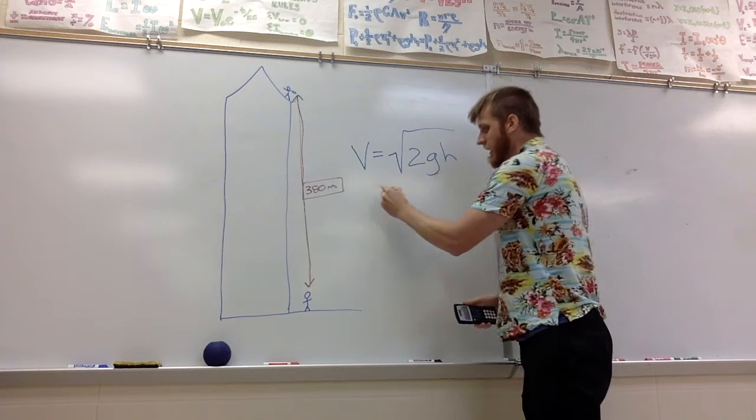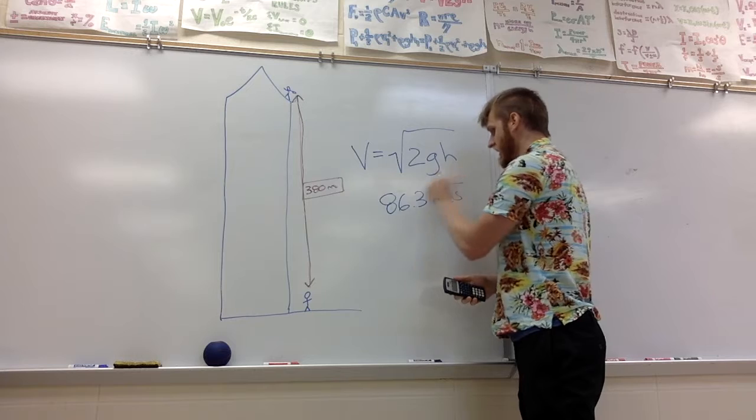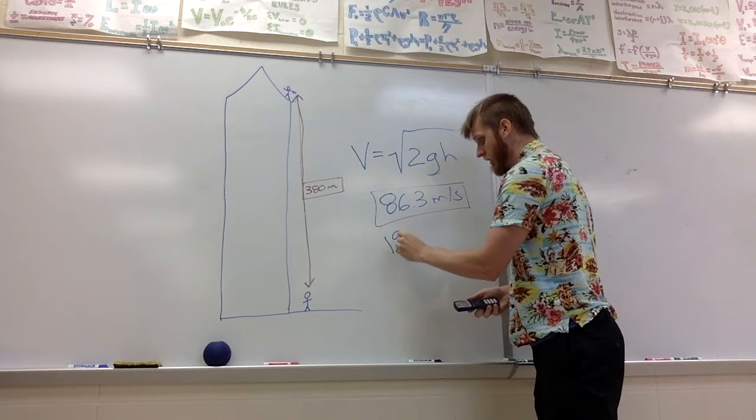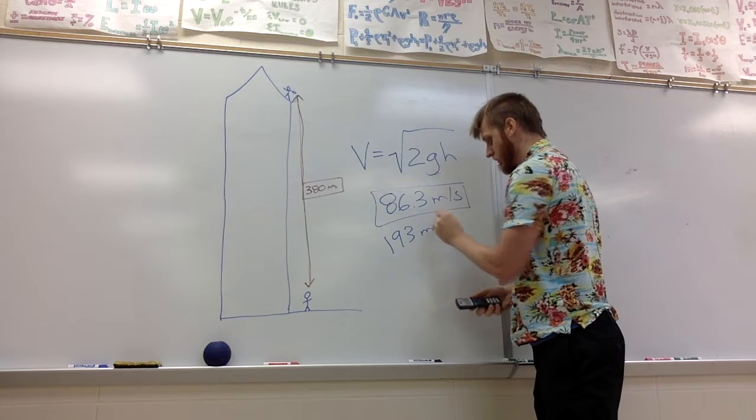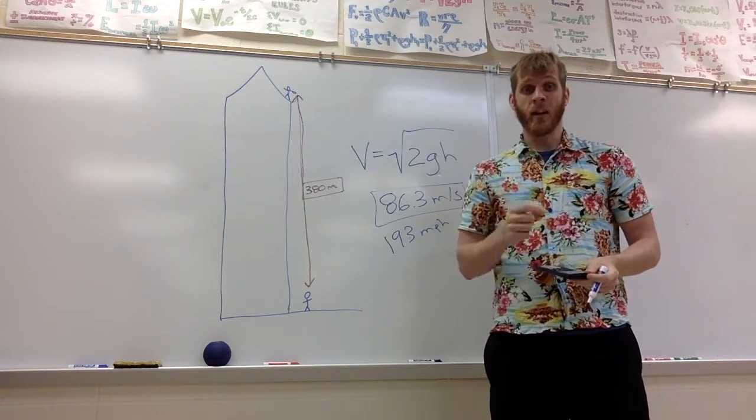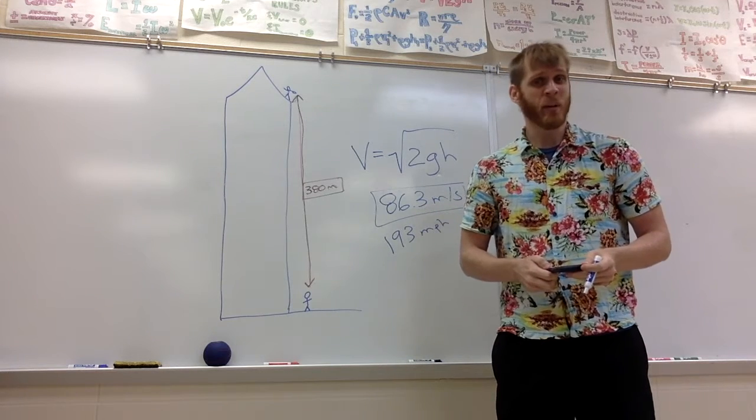Typing in the numbers, I get that the velocity is 86.3 meters per second, which is about 193 miles per hour. That's pretty fast. So if I had a ballpoint pen or a penny hit me at 193 miles an hour, that's probably going to hurt.